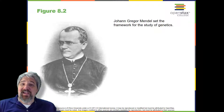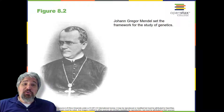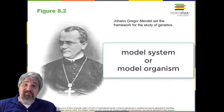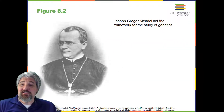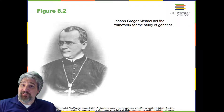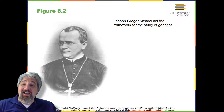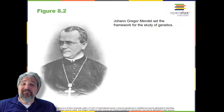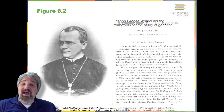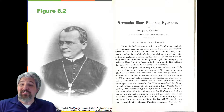In 1856, he began a decade-long research pursuit involving inheritance patterns in honeybees and plants, ultimately settling on pea plants as his primary model system — a system with convenient characteristics used to study a specific biological phenomenon to gain understanding to be applied to other systems. In 1865, Mendel presented the results of his experiments with nearly 30,000 pea plants to the local Natural History Society. He demonstrated that traits are transmitted faithfully from parent to offspring in specific patterns. In 1866, he published his work, Experiments in Plant Hybridization, in the Proceedings of the Natural History Society of Brunn.